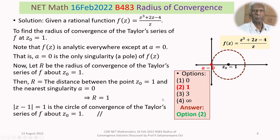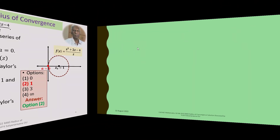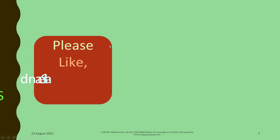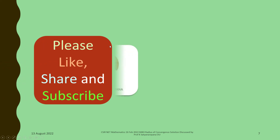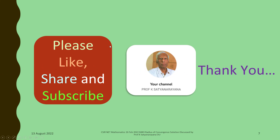That is the discussion of the solution of the problem on the radius of convergence. It is a very simple and straightforward question. I am sure you have understood the solution. Go on working out problems related to expansion of Taylor series and Laurent series. I wish you all the best. Thank you.